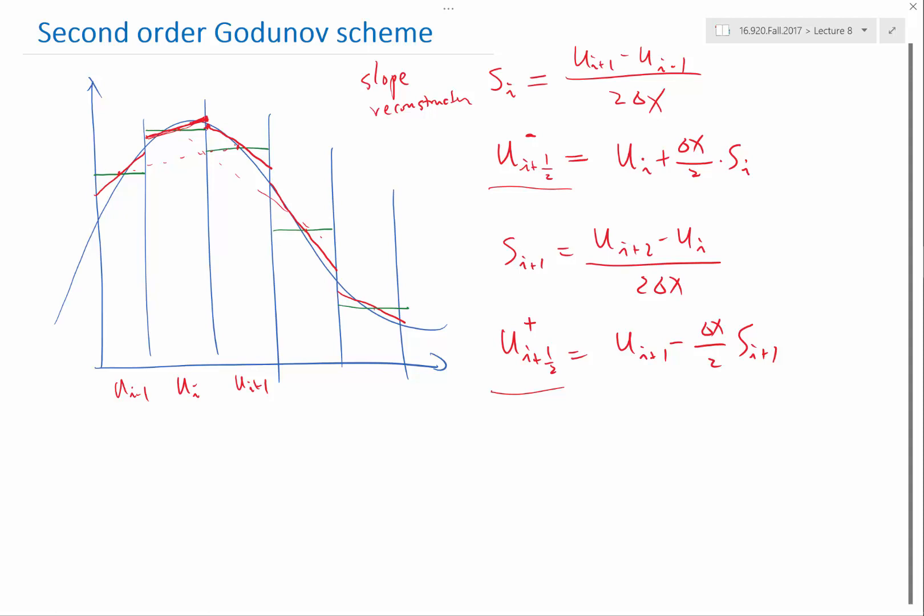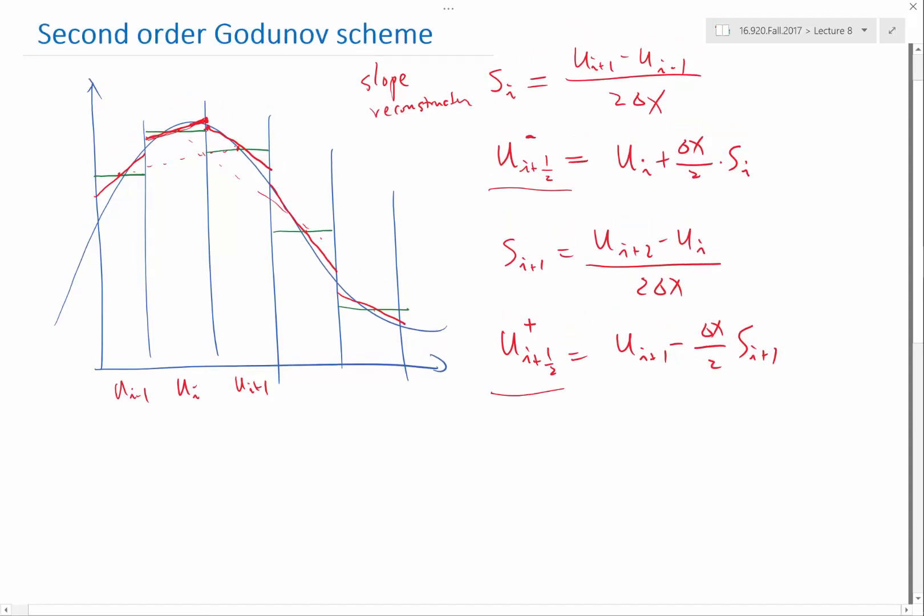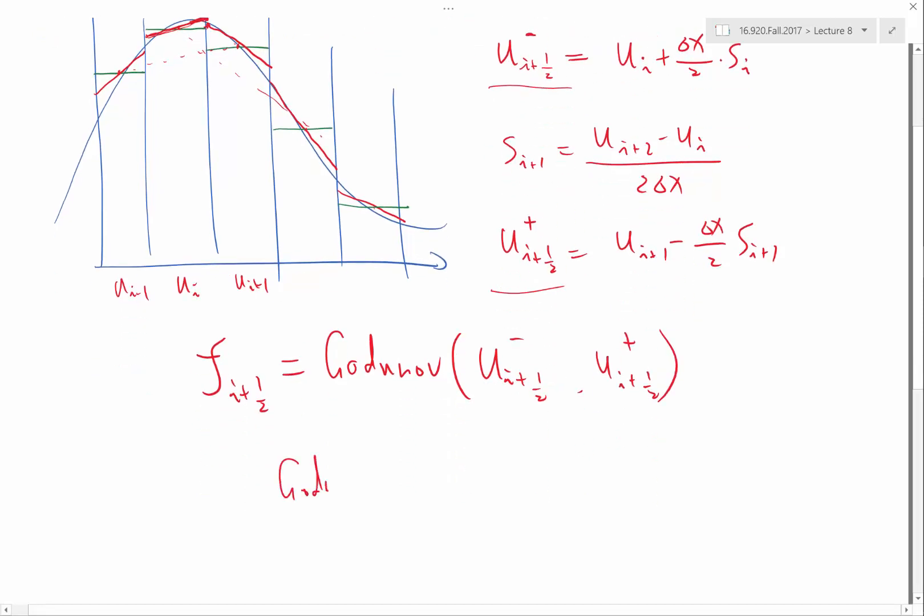Now we have these two values. For the flux at i+½, instead of using the Godunov scheme with u_i and u_{i+1}, I can use u_{i+½}^- and u_{i+½}^+. The Godunov scheme function is exactly the same as the previous case—it's either max of f or min of f depending on different cases. It's the same Godunov flux function, except the inputs are different.